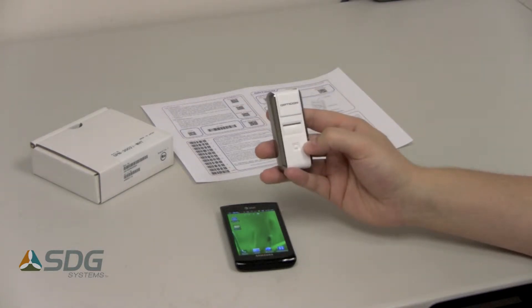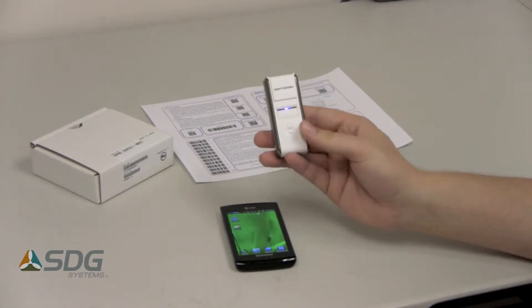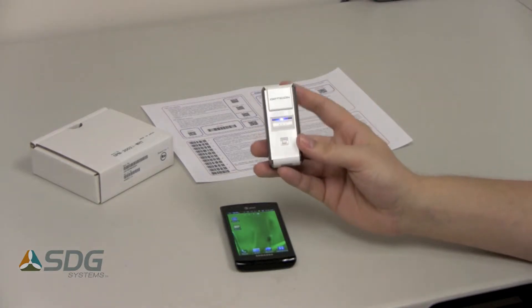First thing we need to do is put it into discoverable mode. So we'll go ahead and hold down the function key for about 5 seconds. The blue LED will come on, letting us know it's in discoverable mode.